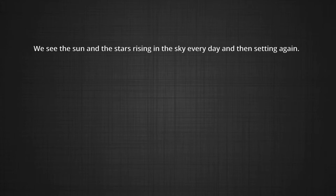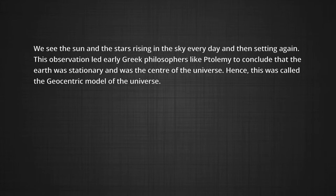We see the sun and the stars rising in the sky every day and then setting again. This observation led Greek philosophers like Ptolemy to conclude that the earth was stationary and it was the center of the universe. Hence, this was called the geocentric model of the universe.